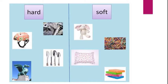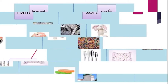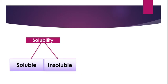Soft objects are soft to touch and they are flexible. Examples: teddy bear, a pillow, rubber band, a piece of sponge, etc. Next comes solubility.